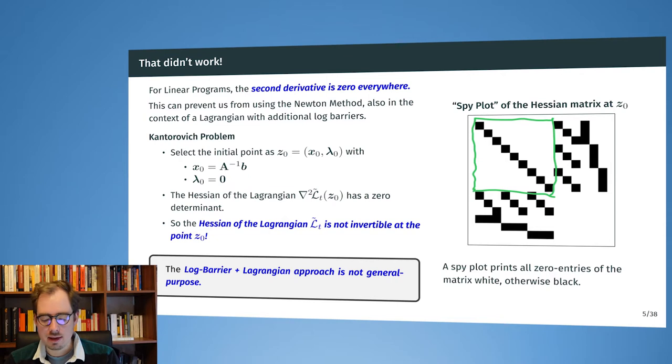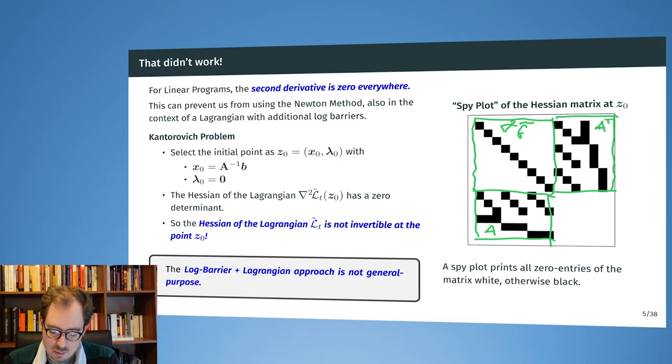And what happens now if we take the original point or the starting point that we had defined in the previous lecture and plug that in? Then we will find that the Hessian is not invertible at that point. So now we see how the Hessian looks like and we can clearly see in the SPY plot what the different components are. So a SPY plot is an image that shows the matrix, and all the elements of the matrix that are zero are white or transparent and all the other elements are black.